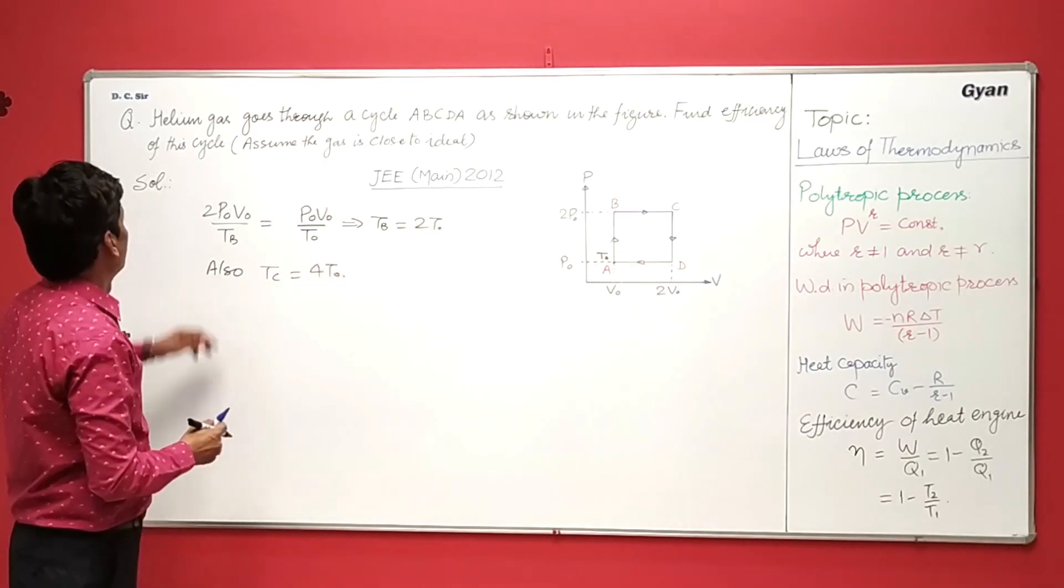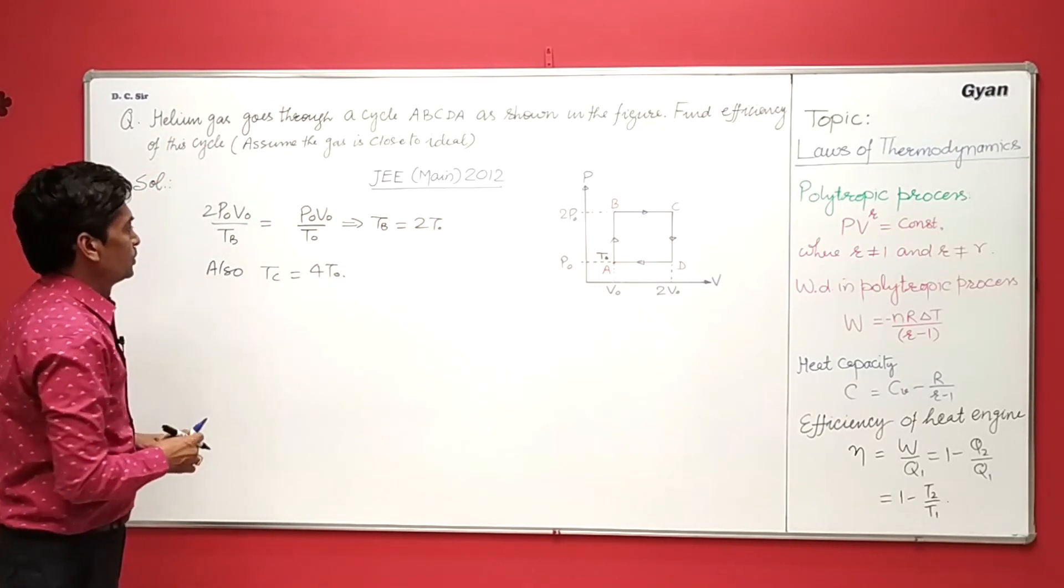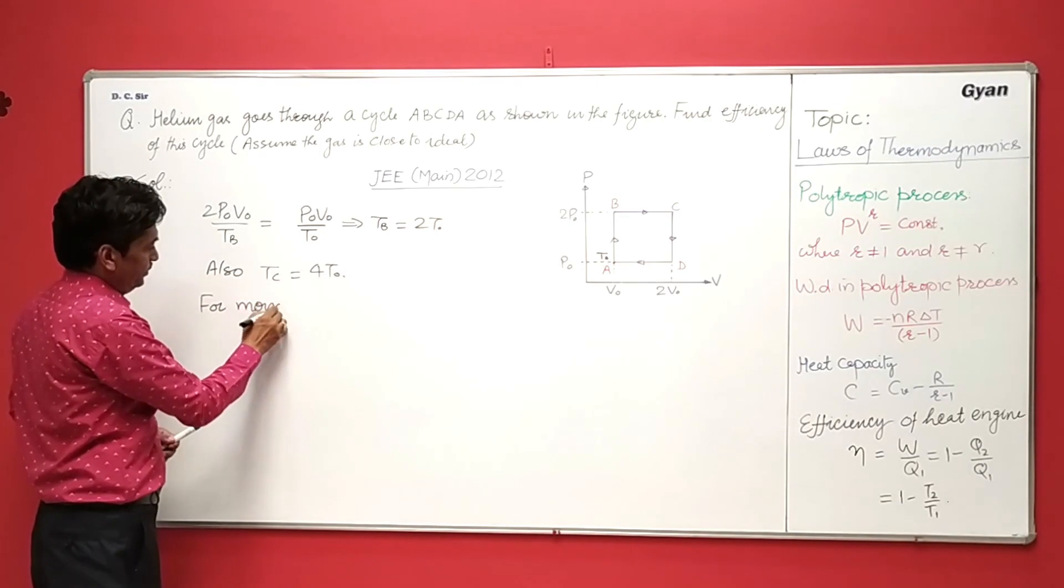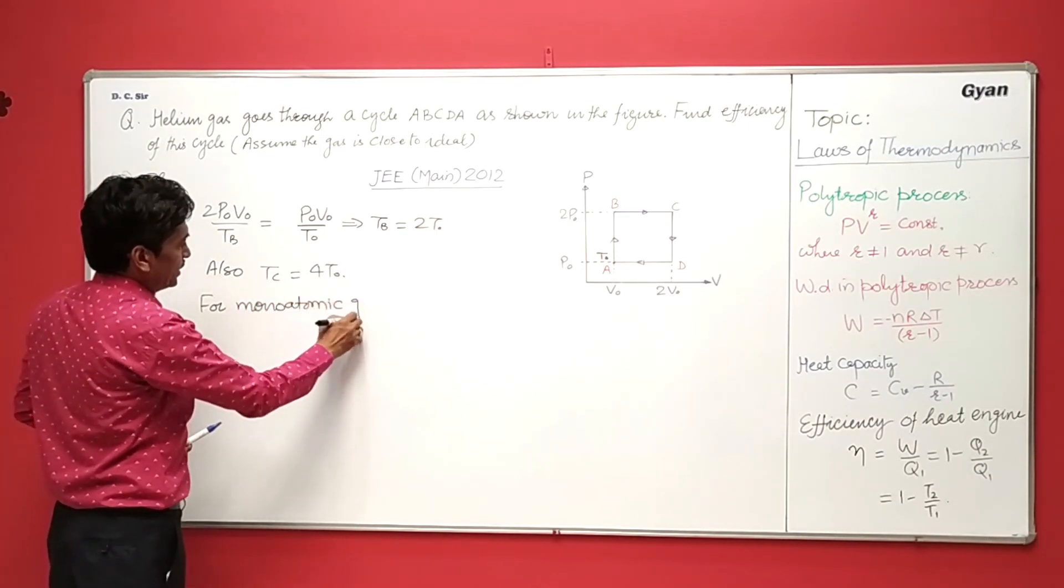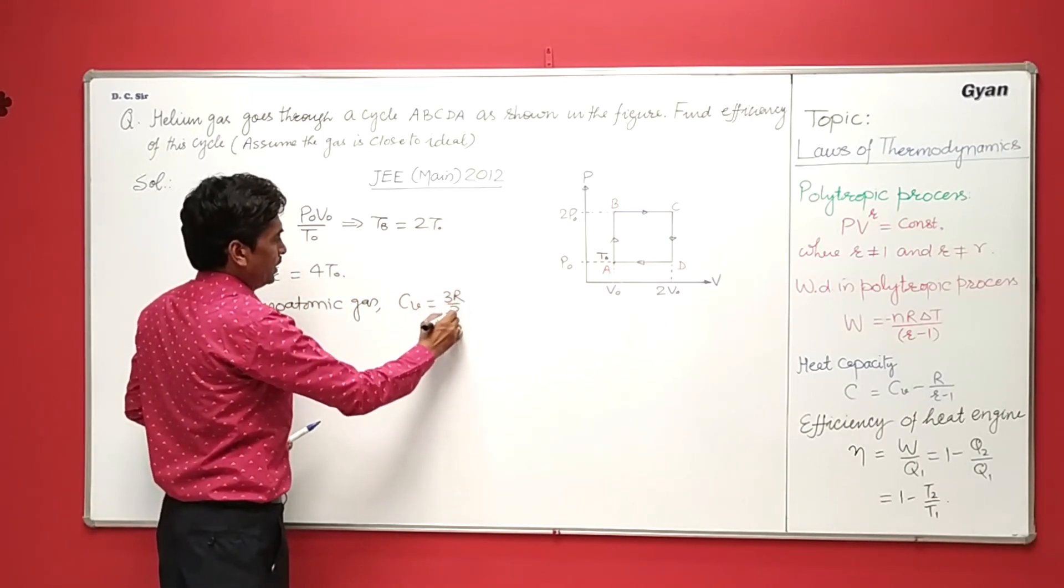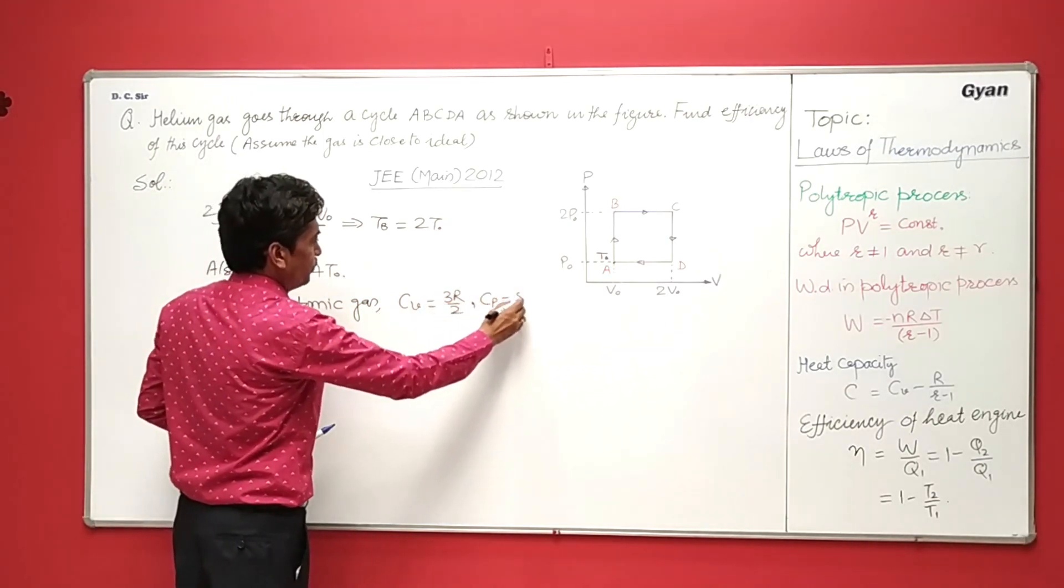Now as the gas, for monoatomic gas, Cv is equal to 3R by 2 and Cp is equal to 5R by 2.